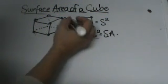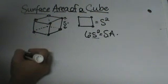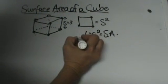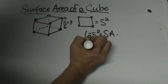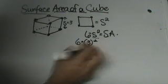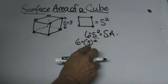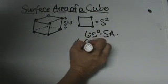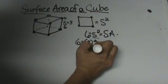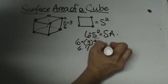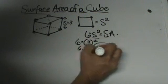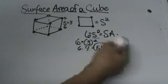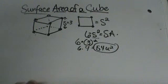Now let's plug in a value. Let's say that the side of our cube is three. So let's plug in six times three squared. Based on the order of operations we are going to square three first. Three squared is nine, and six times nine is 54. So that would be the surface area of the cube — 54 squared units, squared inches, squared feet. So it is fairly easy to plug in.